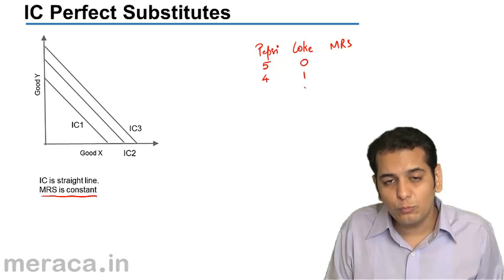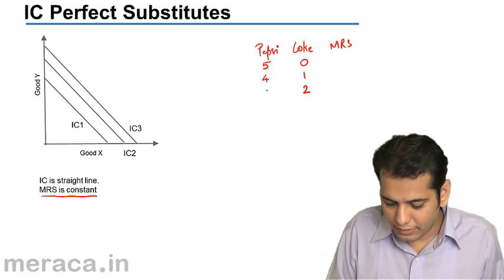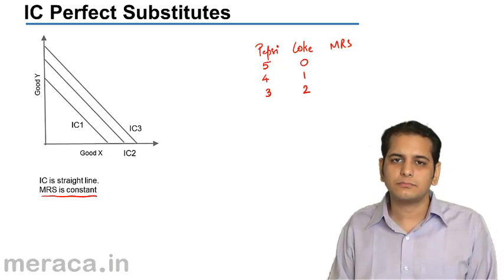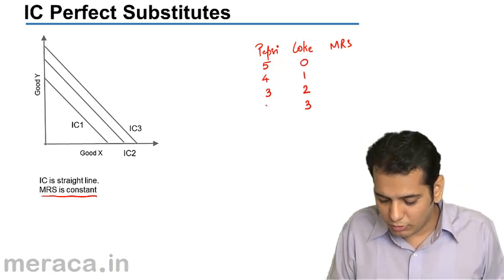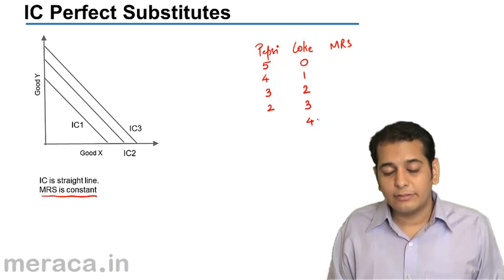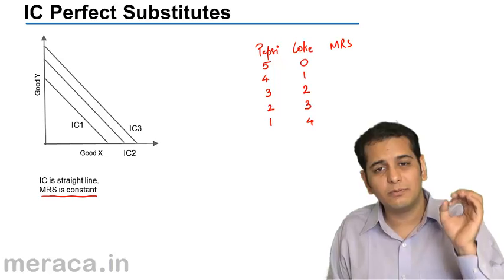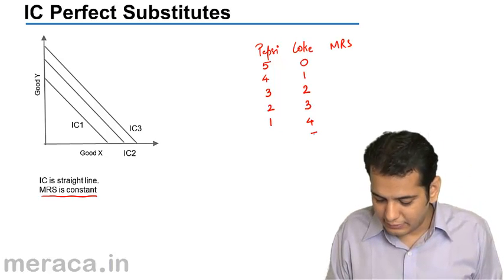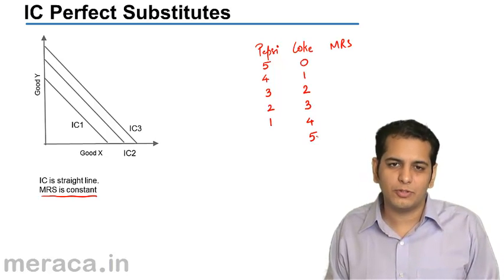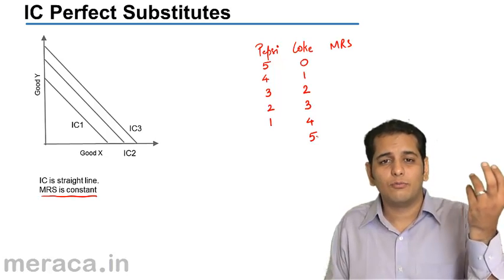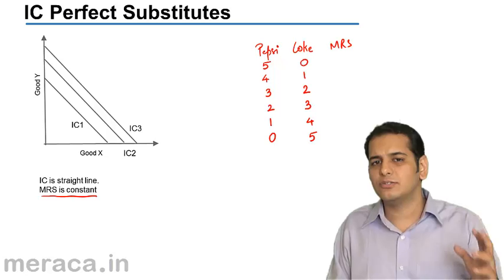If I give you 1 more bottle of Coke, how many bottles will you exchange? Again, only 1 — so you will be left with 3 bottles. If I give you 1 more bottle of Coke, you will again exchange 1 bottle, leaving you with 2. If I give you 4 bottles of Coke, you will exchange the additional bottle for 1 bottle of Pepsi, leaving you with 1. And finally, if I give you 5 bottles of Coke, you wouldn't mind exchanging all 5, because for you it does not matter if you have 5 bottles of Coke, 5 bottles of Pepsi, or any combination between them. So you will be left with 0 bottles of Pepsi.